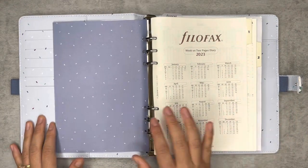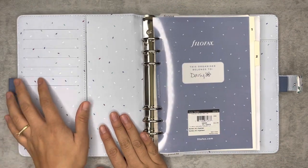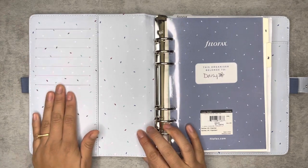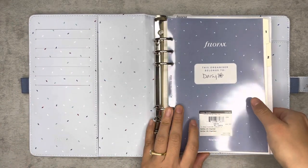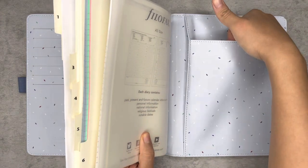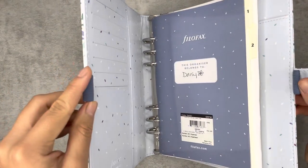The inside is also nice and colorful. It comes with card pockets, a pocket here, and then in the back it comes with two other pockets as well, and then you have two pen holders.